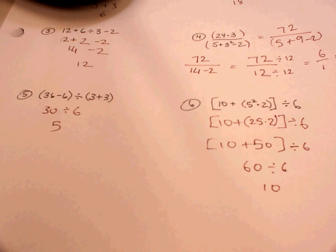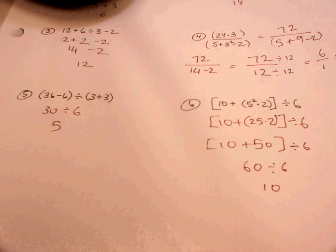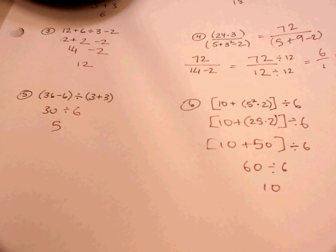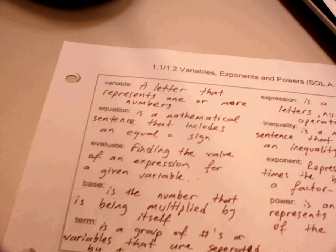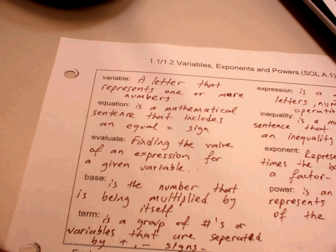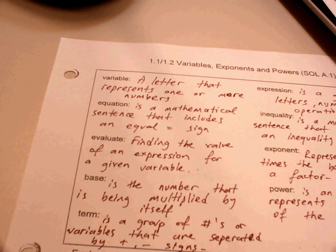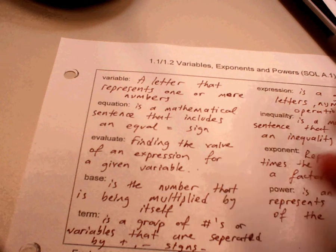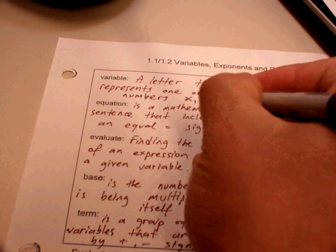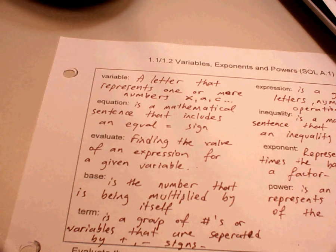Our next topic is variables and exponents. A variable is a letter that represents one or more numbers. You could have variables such as x, a, c, and so on.